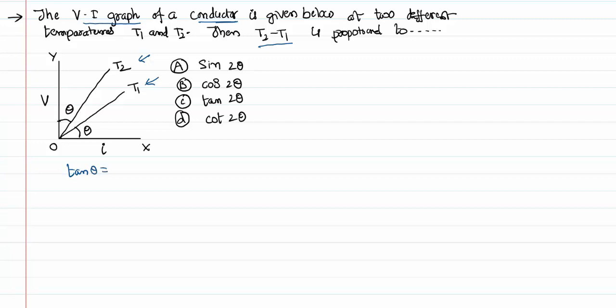Tan θ is the slope. The slope of any graph is the opposite side by adjacent side, which is V by I. But we know V equals IR, so V by I is nothing but equal to R. That implies tan θ equals R, the resistance of the given wire in this problem.